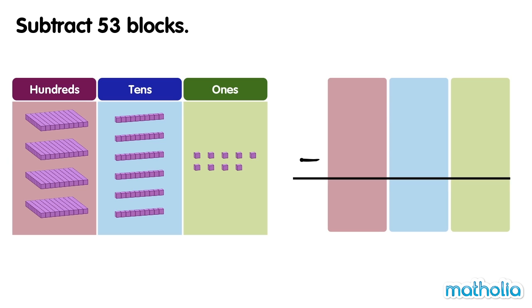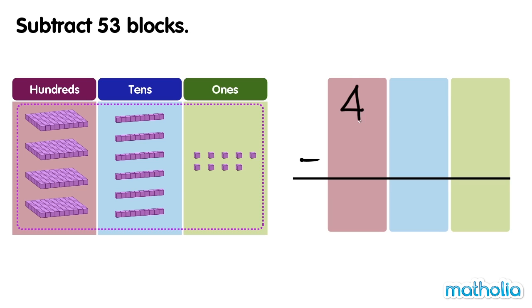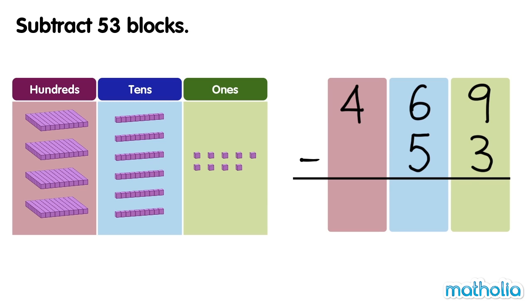Subtract 53 blocks. We have 469 blocks. We subtract 53 blocks. Let's start by subtracting the ones. 9 ones minus 3 ones equals 6 ones.